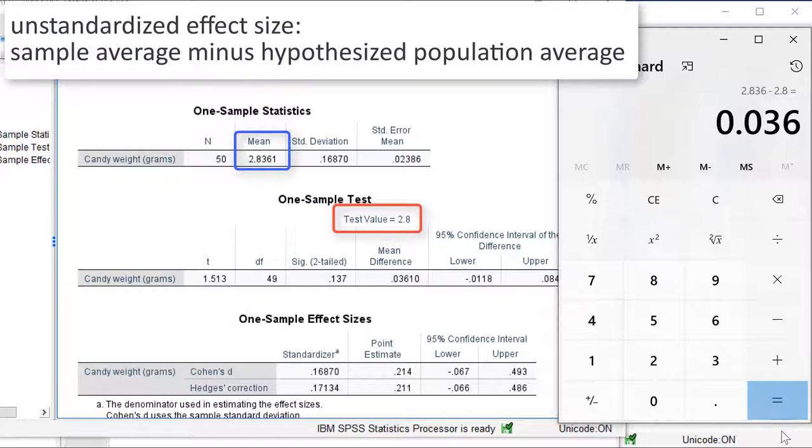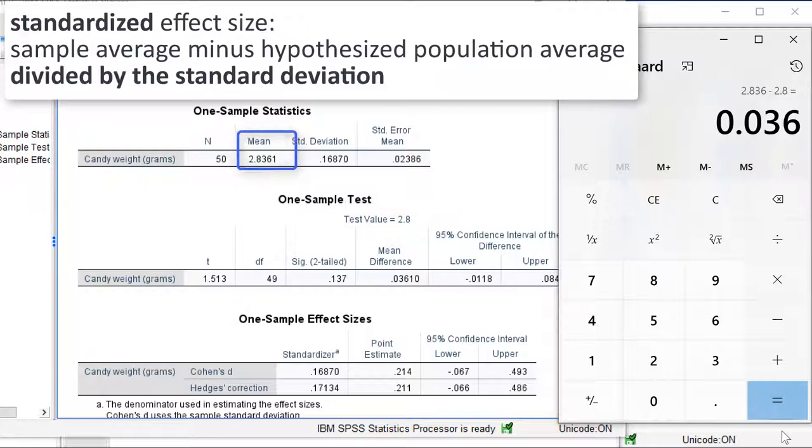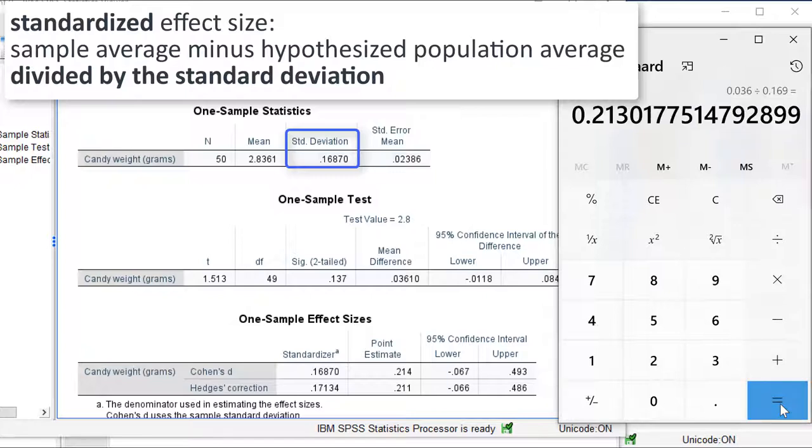If we want to standardize the effect size, we must divide by the standard deviation. The standard deviation is reported in the table. It is 0.169, so we divide by 0.169 and we obtain a Cohen's d of 0.21, which equals the value reported by SPSS version 27.